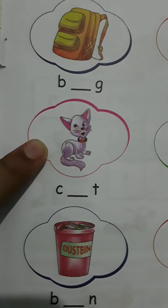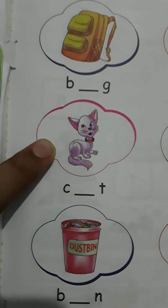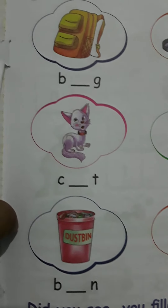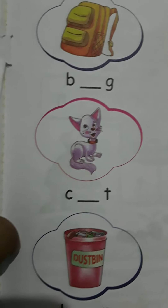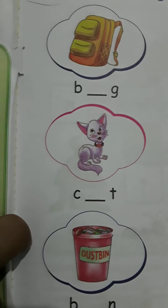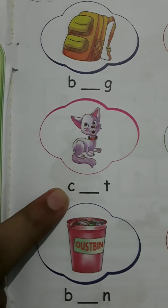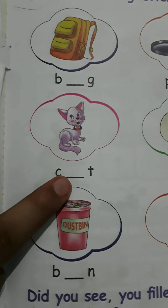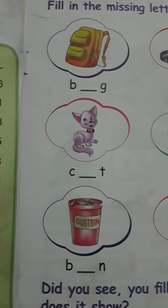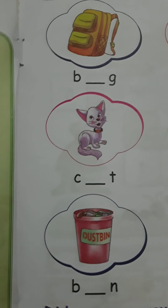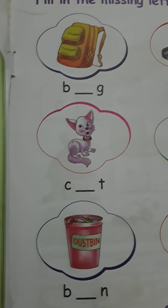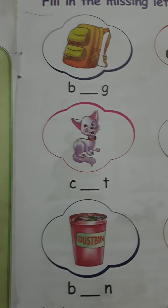Here we can see what is the photo of this. This is a cat. And what is this spelling? C-A-T. Cat. And here we have what is given? C-T. So here we have to write A, and this will become cat. Very good.